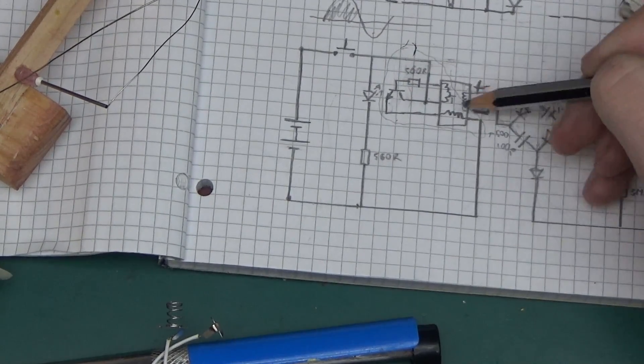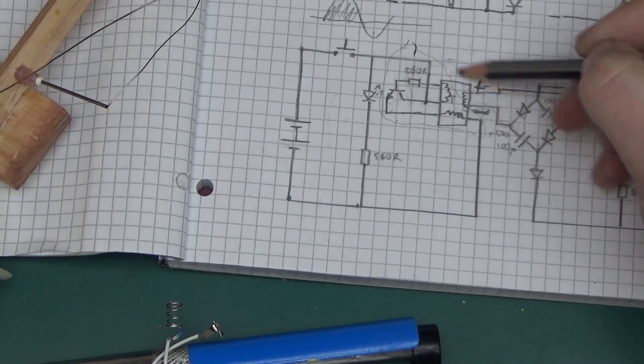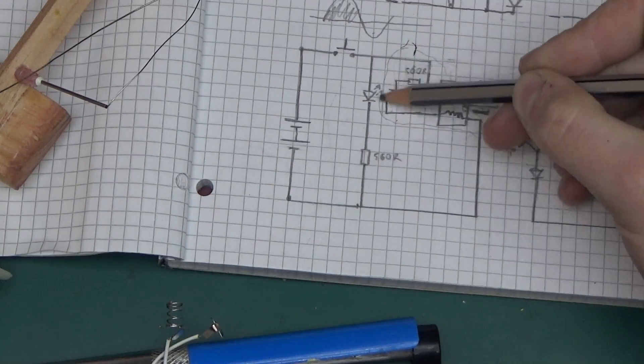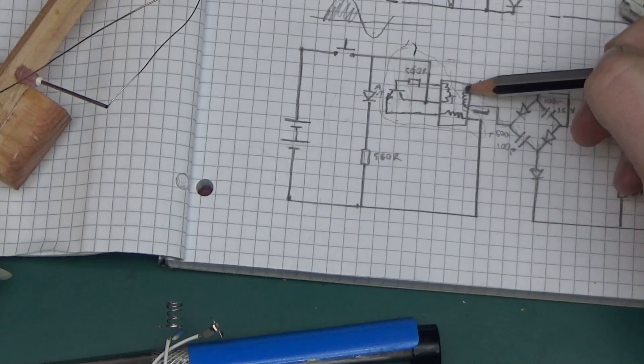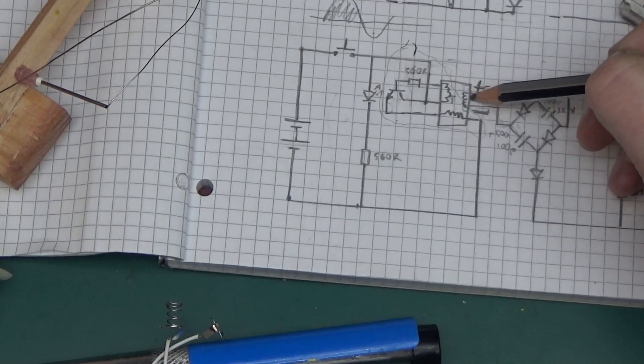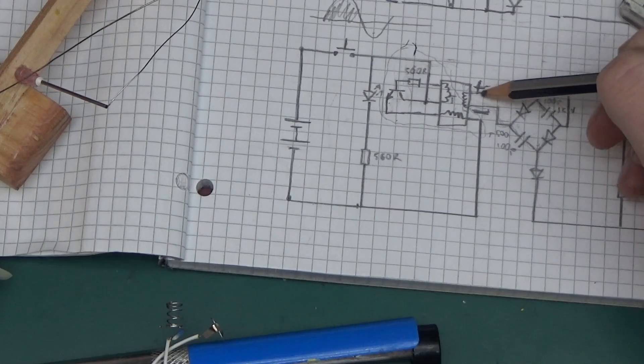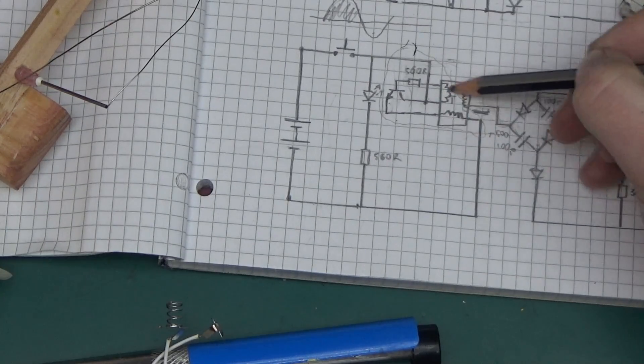It starts conducting through this coil, then it induces the negative voltage in here, closes the base, the coil shuts down and induces a spike. Yeah, it will just oscillate. It's a classic Joule Thief.